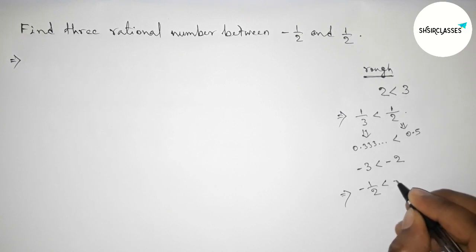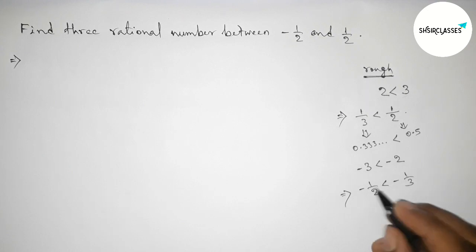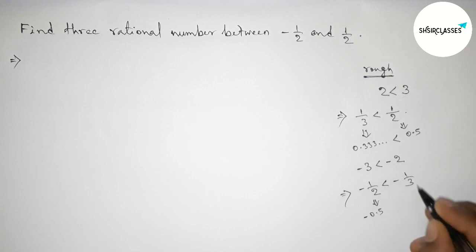Because the value of -1/2 that is equals to -0.5, and this is -0.333 and continuous. And we know that less negative number is always greater, so -0.333 is always greater than -0.5.